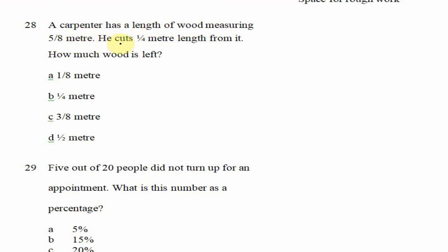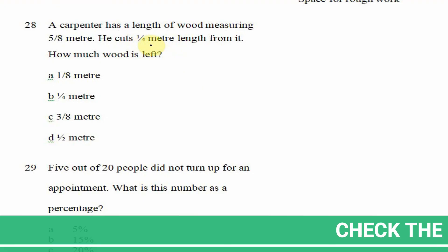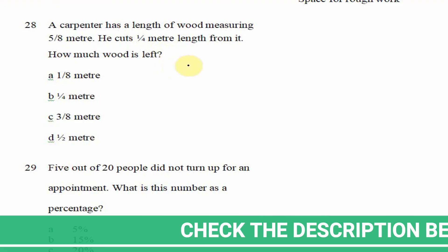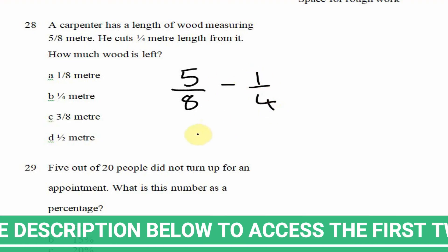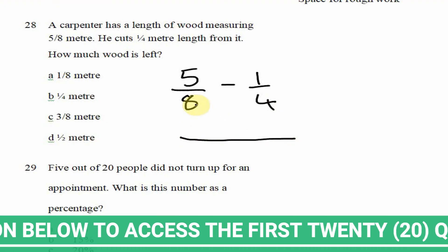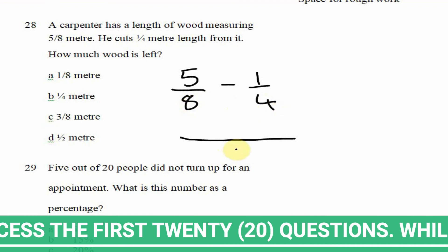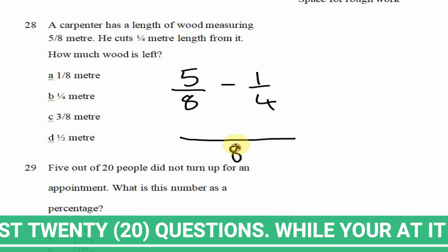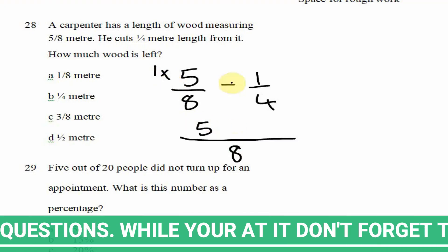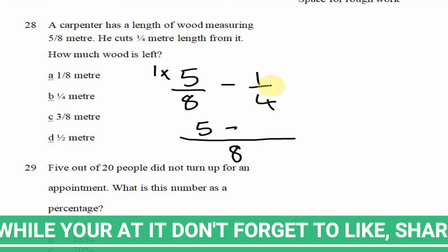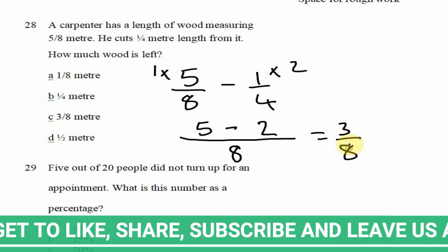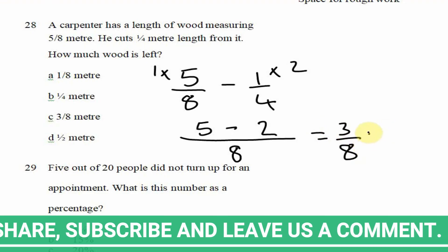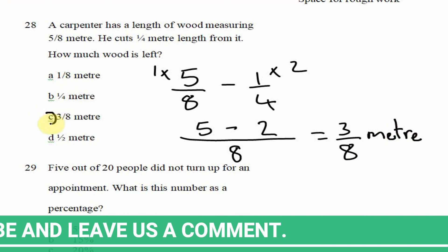Now looking at question 28: a carpenter has a length of wood measuring 5/8 meters. He cuts a quarter meter length from it. How much wood is left? We take 1/4 from 5/8. Using the LCM method, the smallest number both 8 and 4 go into without remainder is 8. Eight into eight goes 1 time: 1 × 5 = 5. Four into eight goes 2 times: 2 × 1 = 2. Five minus two = 3, divided by LCM 8. The answer is 3/8 meters, which is option C.